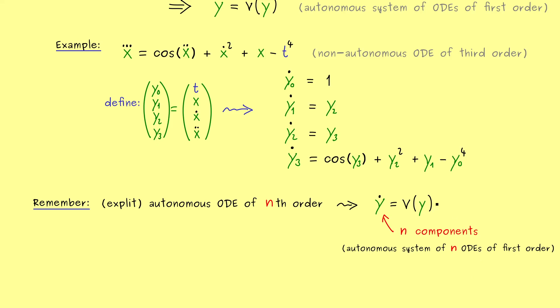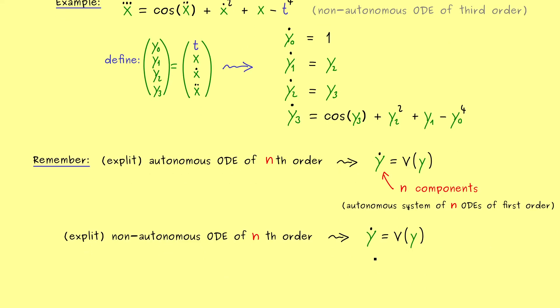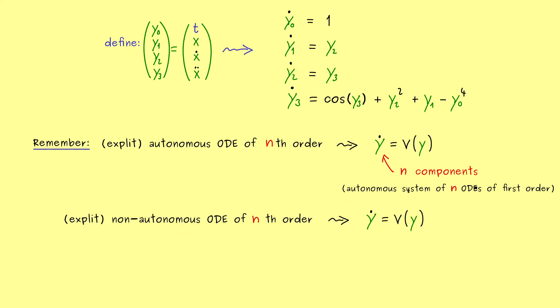And now you know we can do exactly the same if we have a non-autonomous ODE. We simply do the substitution as explained here, which means we get a system of ODEs but y now has n plus 1 components.